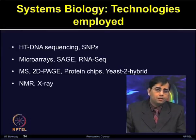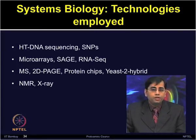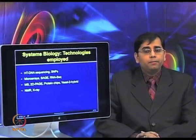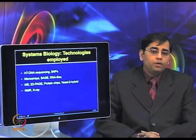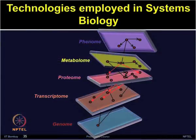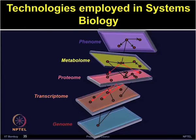For proteomics: mass spectrometry, two-dimensional electrophoresis, protein chips, and two-hybrid methods. X-ray and NMR are mainly employed for metabolic analysis, the metabolomics. To generate the systems-level information, the study requires different types of technologies which could be employed in biological systems.